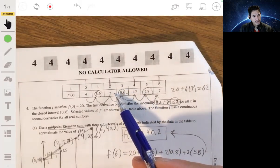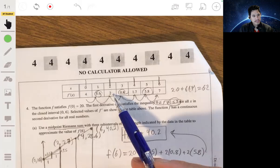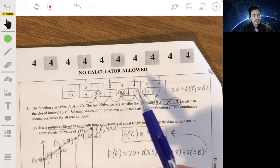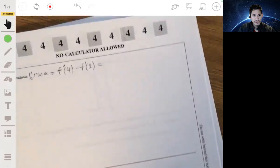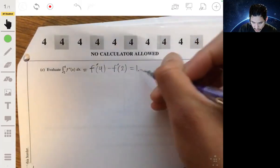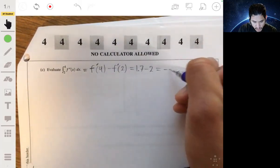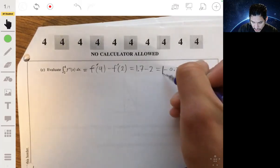We can see f prime of 2 is 2, and f prime of 4 is 1.7. So this would just be 1.7 minus 2. Now it would just be equal to negative 0.3.